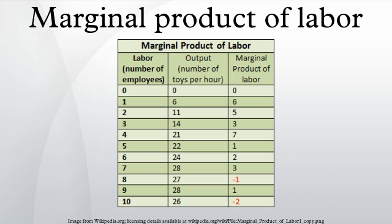Relation between MPL and APL: The average product of labor is the total product of labor divided by the number of units of labor employed, or Q/L. The average product of labor is a common measure of labor productivity. The APL curve is shaped like an inverted U. At low production levels the APL tends to increase as additional labor is added. The primary reason for the increase is specialization and division of labor. At the point the APL reaches its maximum value, APL equals the MPL. Beyond this point the APL falls. During the early stages of production, MPL is greater than APL. When the MPL is above the APL, the APL will increase.